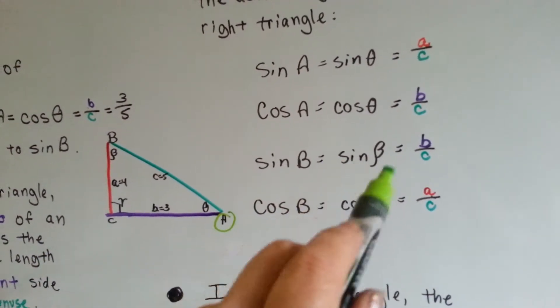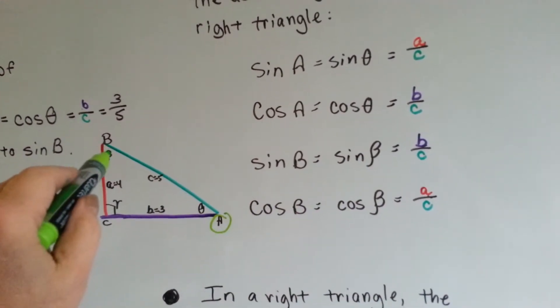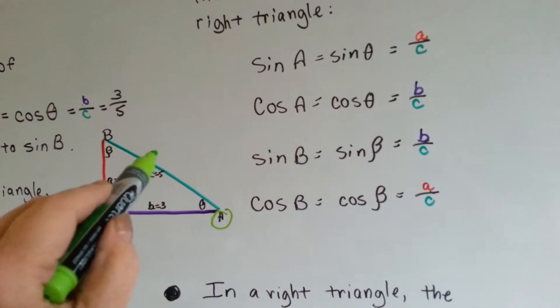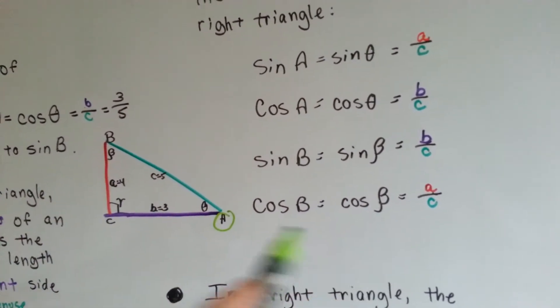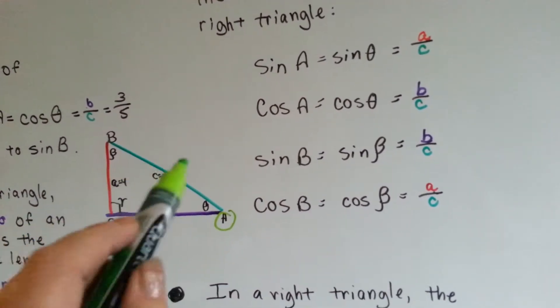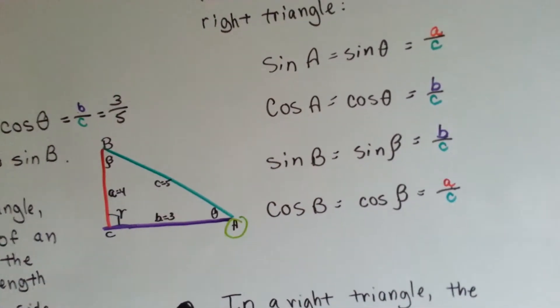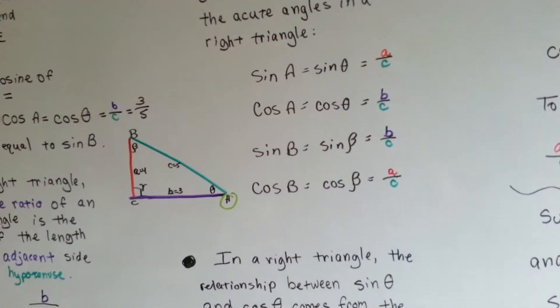Sine B, which is beta, which is this one up here, is B over C, and the cosine for beta is A over C. Does that make sense? Do the colors help?